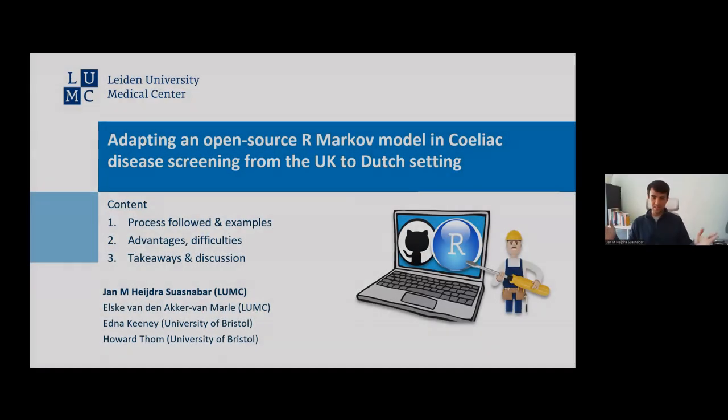Okay, I'll just restart. So I'm pleased to be here to talk to you about my recent experience with adapting an open source Markov model in R from the UK setting in order to explore a similar research question about testing for celiac disease in the Netherlands. This is a project I've been working on with my colleague Elske van den Acker, and Howard Tom and Edna Kimi who developed the UK model have also been involved by advising us in the process. Edna actually presented the UK model at the R for HTA workshop in 2021, so the regular attendees should be familiar with it.